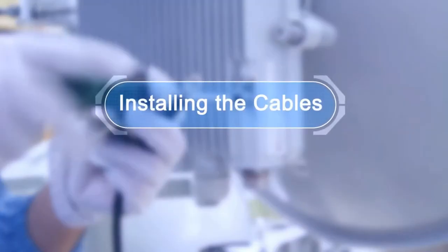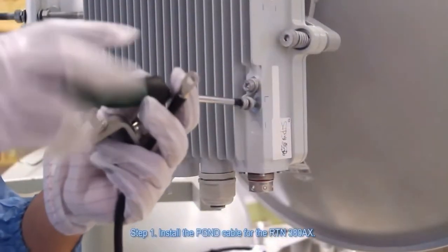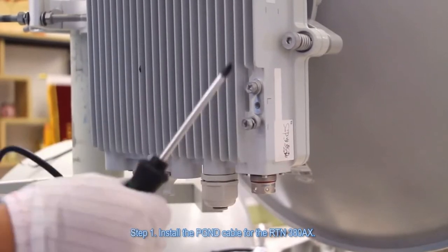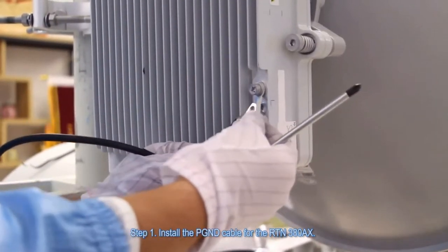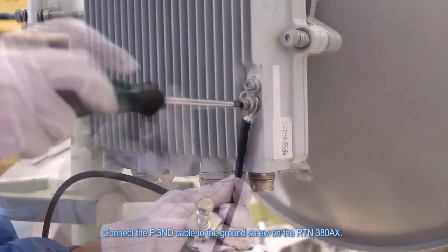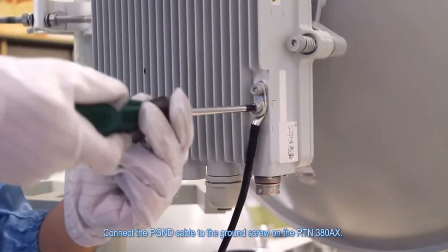Installing the cables. Step 1: Install the PGND cable for the RTN380AX. Connect the PGND cable to the ground screw on the RTN380AX.